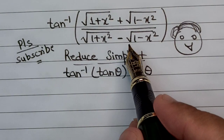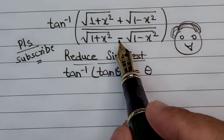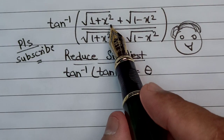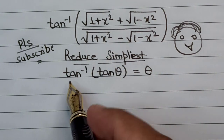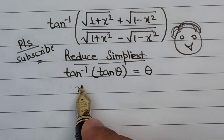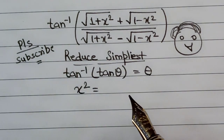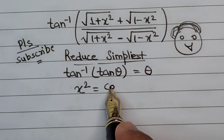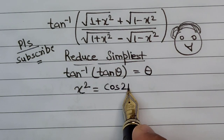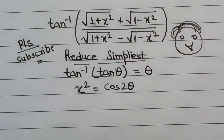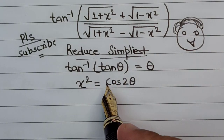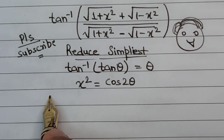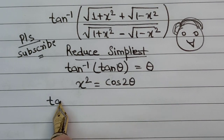In order to do so, we'll have to make a substitution for x². So let us substitute x² = cos 2θ. The reason for choosing this substitution will become evident in the next step.